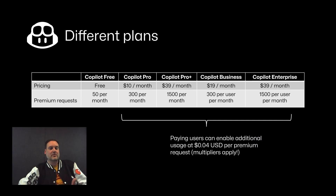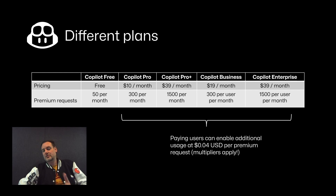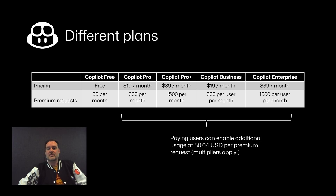Putting that into perspective — you now know what premium requests are and how many you have available in your licensed version. Copilot Pro Plus gives you 1,500 premium requests per month. Paid users can also enable additional usage at $0.04 per premium request. Be aware that if you hit a multiplier like GPT-4.5, that 50x multiplier means one single request will cost you 50 times $0.04 — so two dollars.